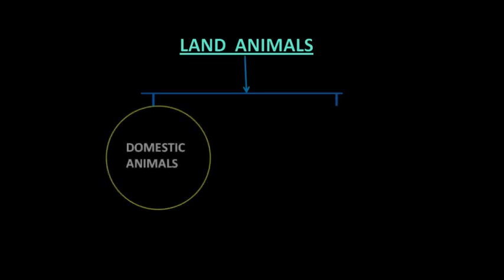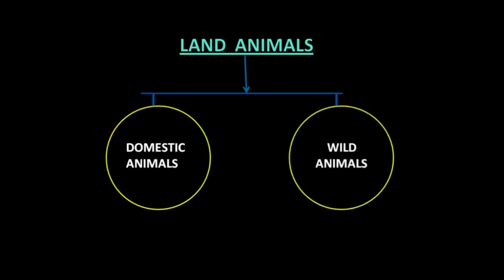Land animals means animals that live on land. Animals that live on land are called land animals. Land animals can be divided into two categories — domestic animals and wild animals. Domestic animals are animals that live in or around our home. Wild animals are animals that live in the jungles or forest. First we will study about the domestic animals.